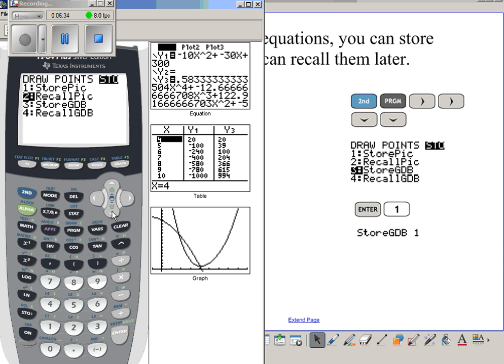If you store it as a picture, it will just save your screen, so it would save your data plots and what your equation looks like, but it wouldn't save the actual equation. Storing GDB allows you to actually recall the equations you have in there, and you can store it to any location you want.